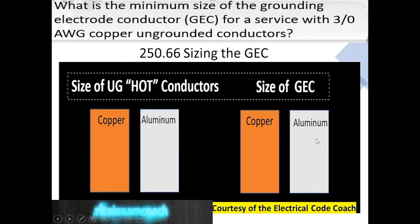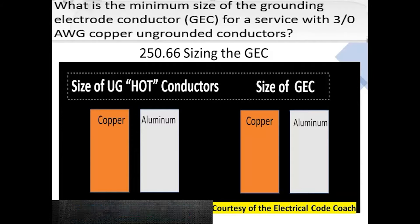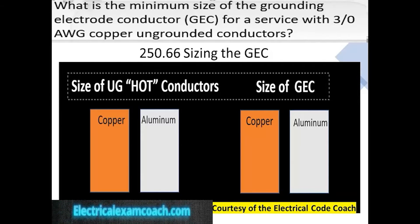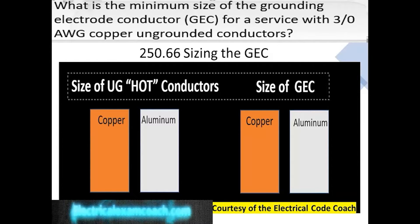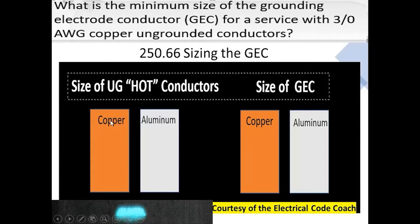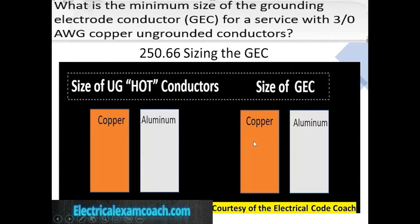The first thing we ask ourselves is: does it mention the type of electrode? No, it doesn't. So we're going to head to table 250.66 and use it at face value. If the question did mention the type of electrode, we would first head to section 250.66 and check in A, B, or C to see if our specific electrode is mentioned and use the value inside that paragraph. In this case, we're just going to use the table. We start on the left-hand side because our ungrounded hots are in copper, and then we need to be careful to cross over to select a copper grounding electrode conductor. In this case, we select a number four.